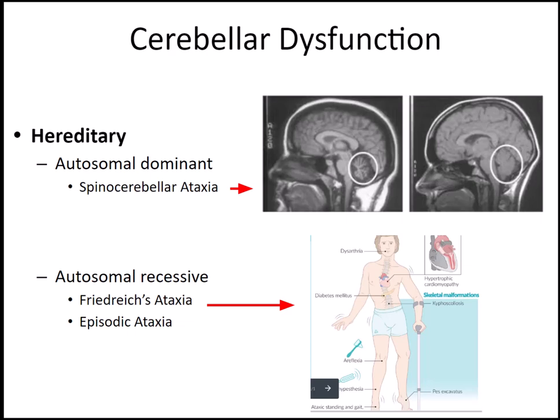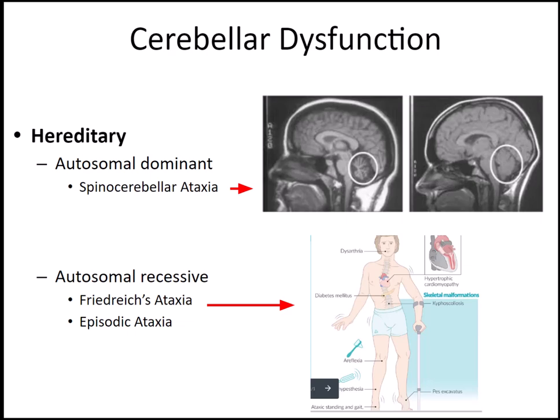To summarize hereditary causes: autosomal dominant includes spinocerebellar ataxia, and autosomal recessive includes Friedreich's ataxia and episodic ataxia. Finally, there is also degenerative, non-hereditary cerebellar dysfunction — an example being multiple system atrophy (MSA).